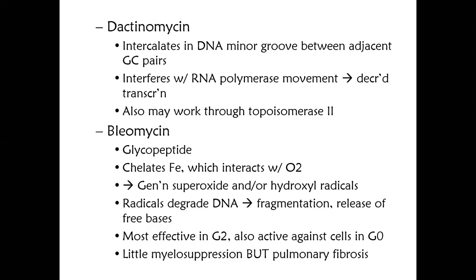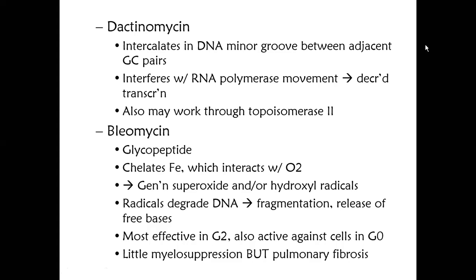The next drug in the same class is dactinomycin — it acts by the same mechanism but also interferes with RNA polymerase movement, preventing transcription. It also inhibits topoisomerase 2. The next drug is bleomycin. When you recall bleomycin from MC, it is notable for having a very complex structure — reportedly one of the toughest structures in MC, with a teacher spending half an hour just to draw it.